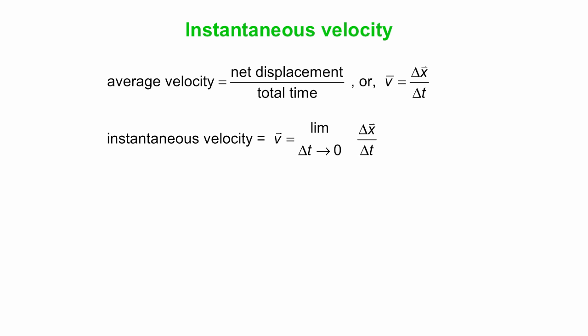The instantaneous velocity happens to be the limit of delta x over delta t as delta t approaches zero. That's sort of a calculus-y way to define it. And the instantaneous speed is the magnitude of the instantaneous velocity.